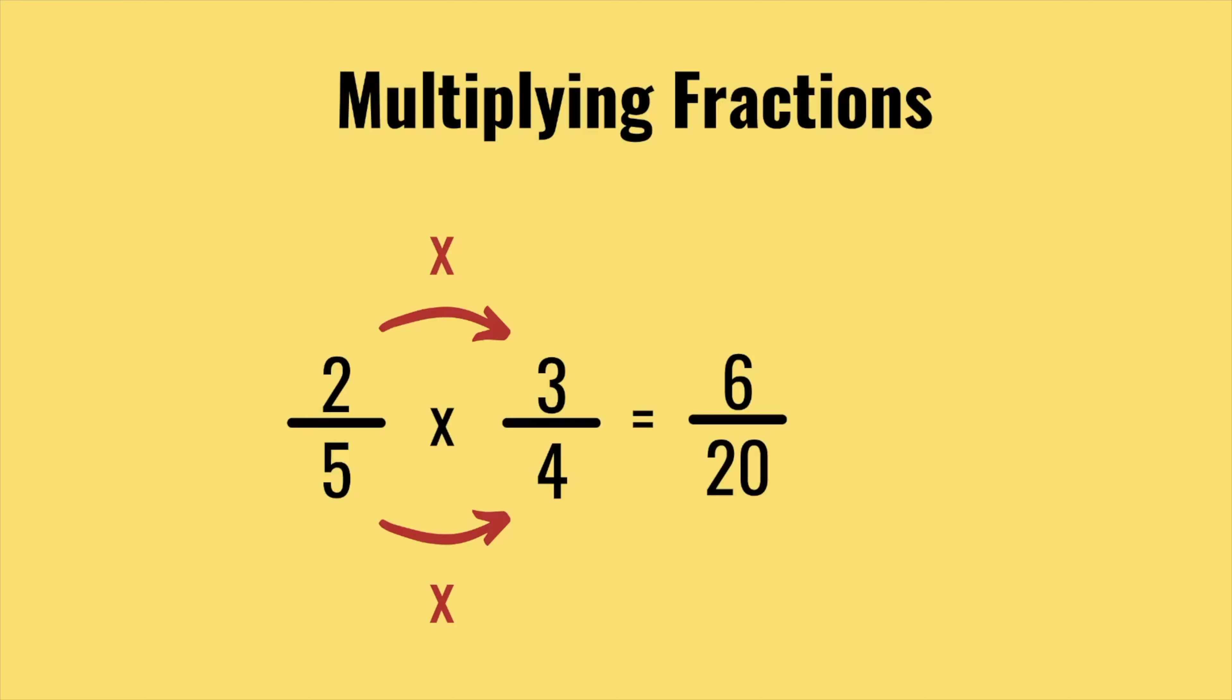The only thing to check is if your fraction can cancel down. In this case ours can. We divide top and bottom by two to get our final answer which is three over ten.